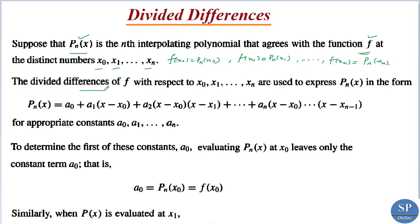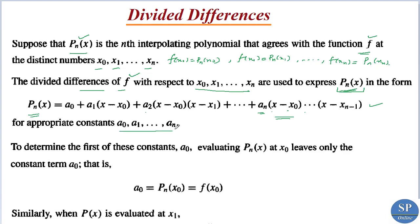The divided differences of f with respect to x0, x1, ..., xn can be used to express the interpolating polynomial pn(x) in the form: a0 + a1*(x - x0) + a2*(x - x0)*(x - x1) + ... + an*(x - x0)*(x - x1)*...*(x - x(n-1)), for appropriate constants a0, a1, ..., an.